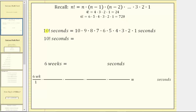And therefore, 10 factorial seconds equals 10 times 9 times 8 times 7 times 6 times 5 times 4 times 3 times 2 times 1 seconds. Let's evaluate this on the calculator.